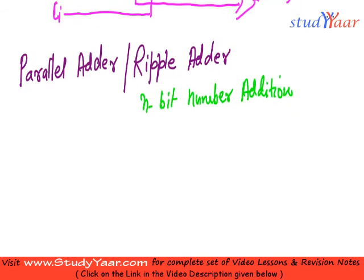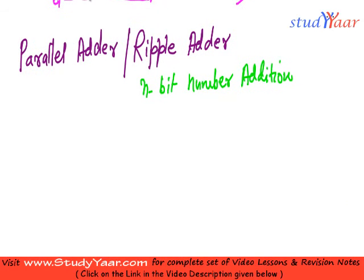Let's see how it looks. This is my full adder. It has an input A, an input B, a sum output, and a carry output.